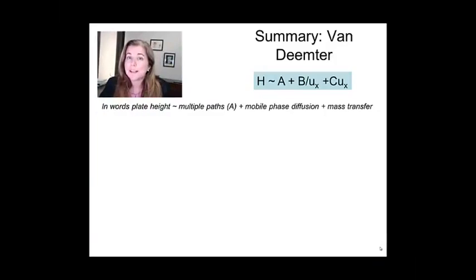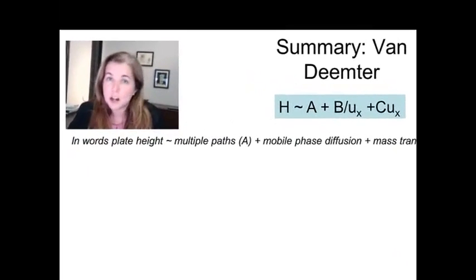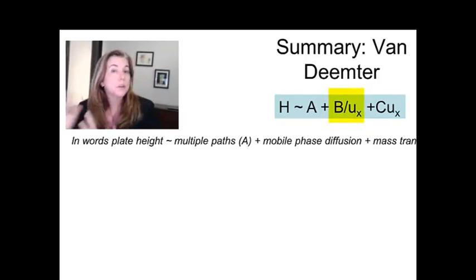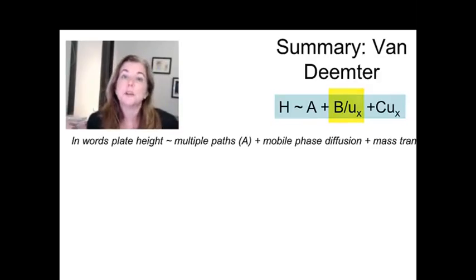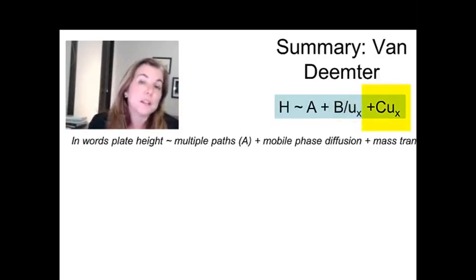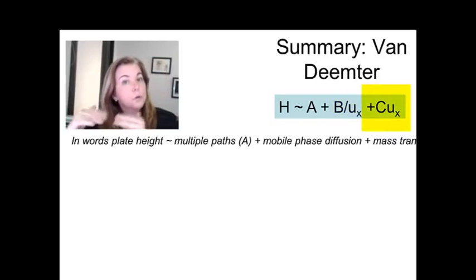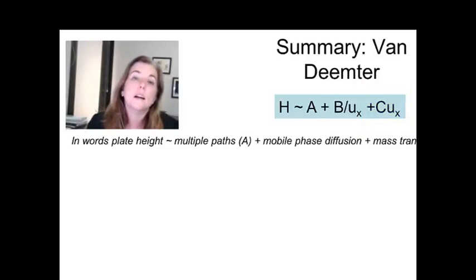To remind everybody where we last left the soap opera of molecules moving through chromatography columns, we discovered that there was one term in this equation for plate height which said go really fast, because if you go really fast through a column you won't have a lot of mobile phase diffusion and your peaks will be narrow. And then we have another term in the equation that says hey if you want your peaks to be narrow you need to leave a lot of time to equilibrate between the column and the stationary phase. Well we got one saying go fast and one saying go slow. So that's what we're going to resolve today.